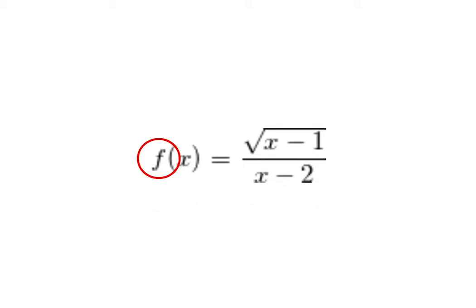We first write f, then equals, then a fraction, with its numerator and the denominator. The formula is then transcribed into text code.